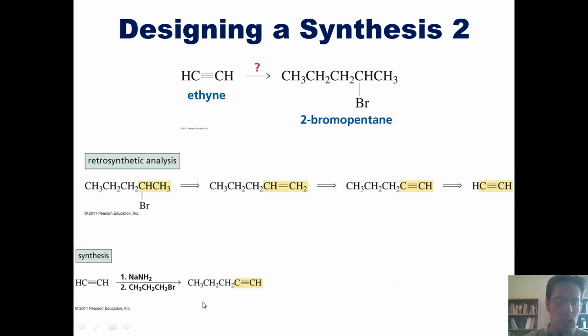At this point, I can treat this molecule with H2 and Lindler catalyst and convert the triple bond into a double bond and then stop. If I take this alkene now and treat it with HBr, I can put the bromine on the Markovnikov position giving me this final product, which is the target in this synthesis.